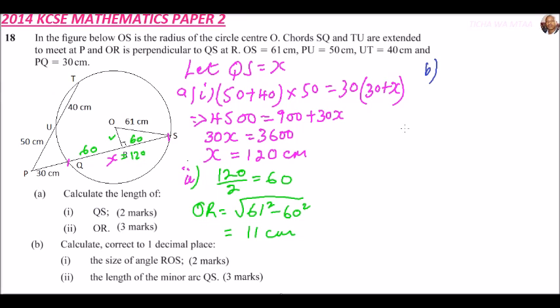Part B: you are required to calculate correct to two decimal places the size of angle ROS. We already have the size of that triangle ORS, so you can use the trig ratios and say sin θ.